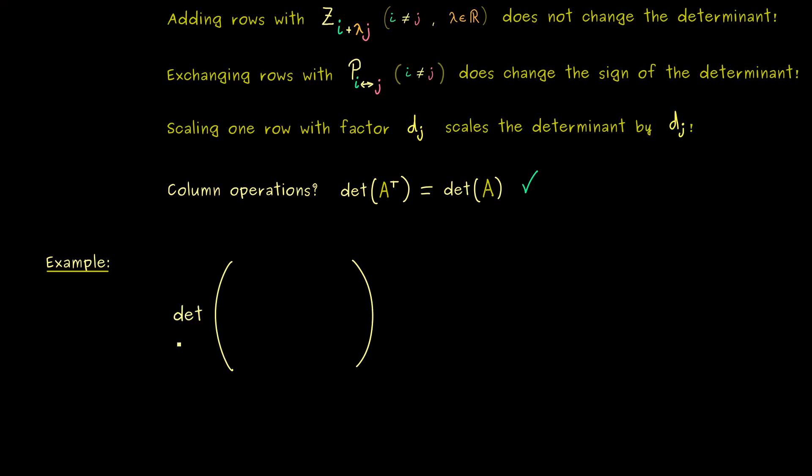So we have a very big matrix where we now want to combine the Gaussian elimination with the Laplace expansion. And in the end we want to have the determinant of this matrix. So here is our 5 times 5 matrix with a lot of numbers. And now you already know, if we want to use the Laplace expansion we would look at the row or the column with the most zeros.